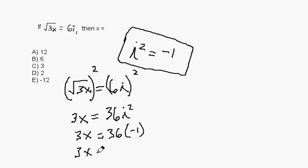Continuing down, 3x equals negative 36. And if we divide both sides by 3, because we're solving for x, 36 divided by 3 is 12, and it's negative. So x is equal to negative 12. Choice E.